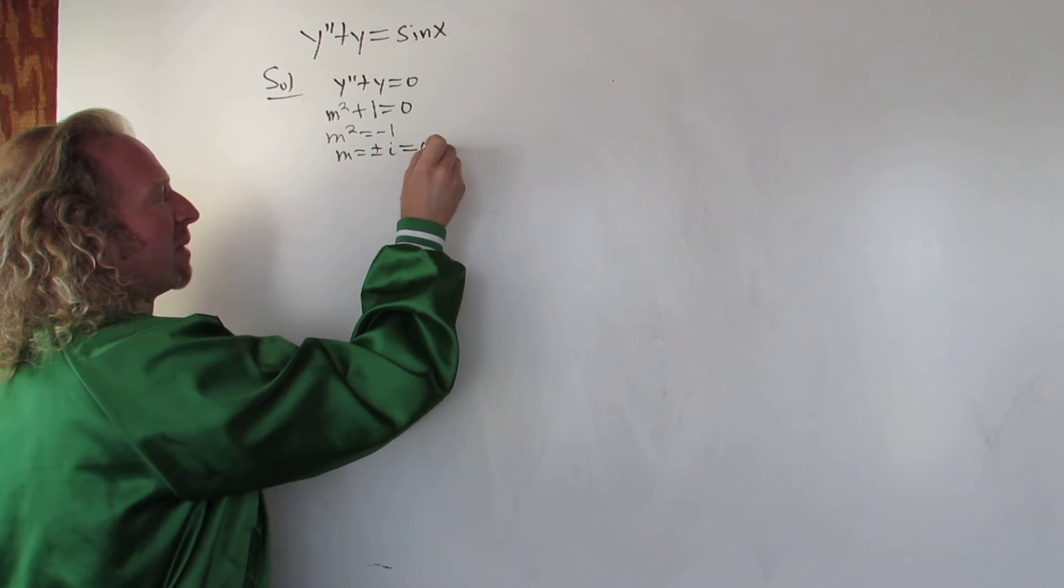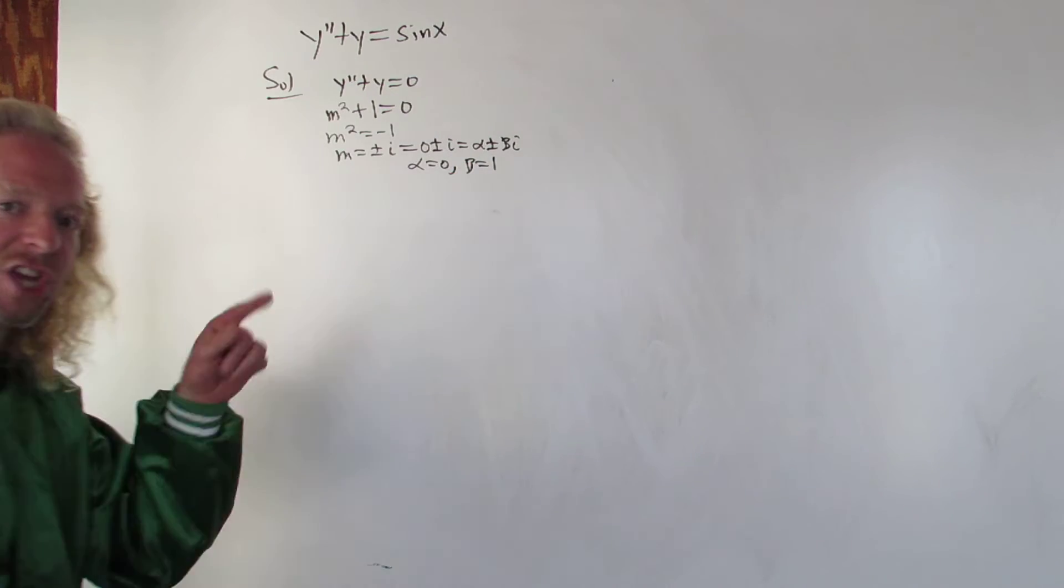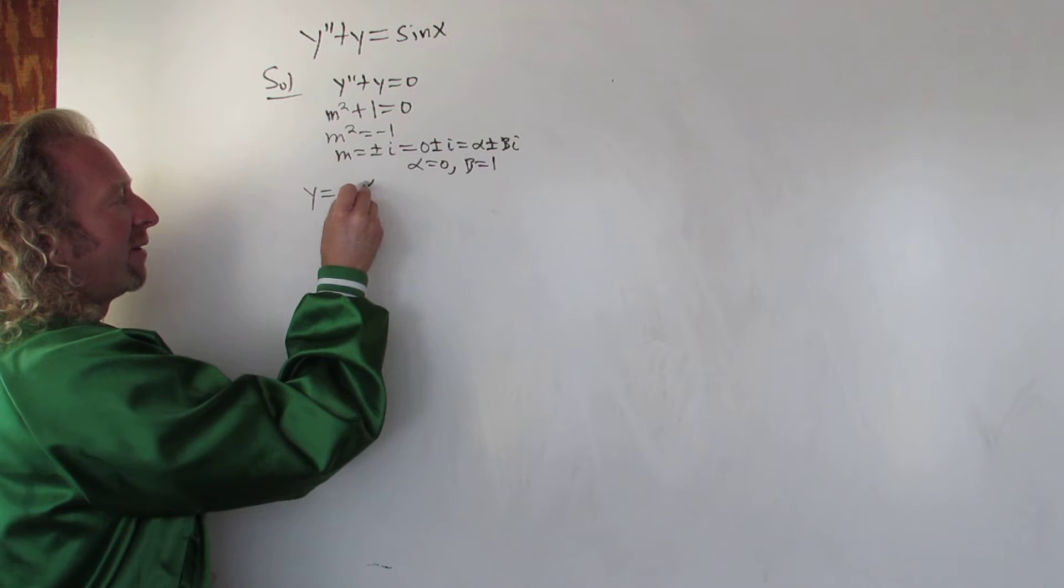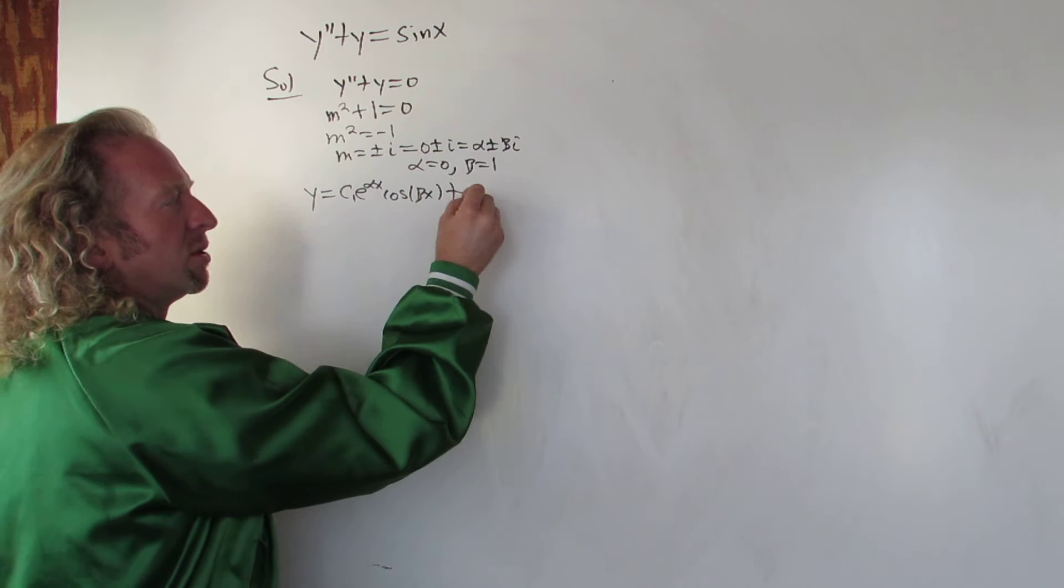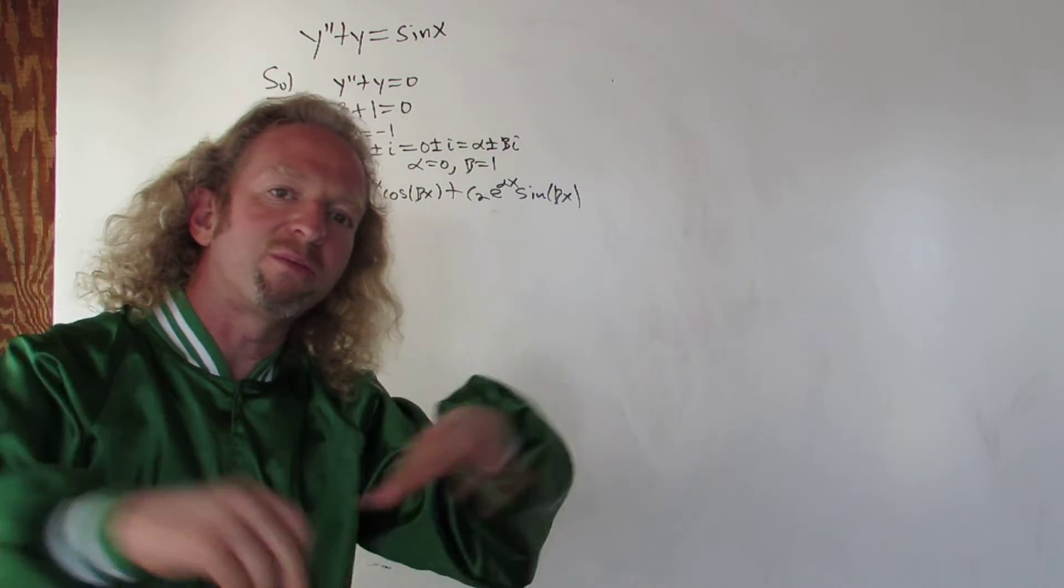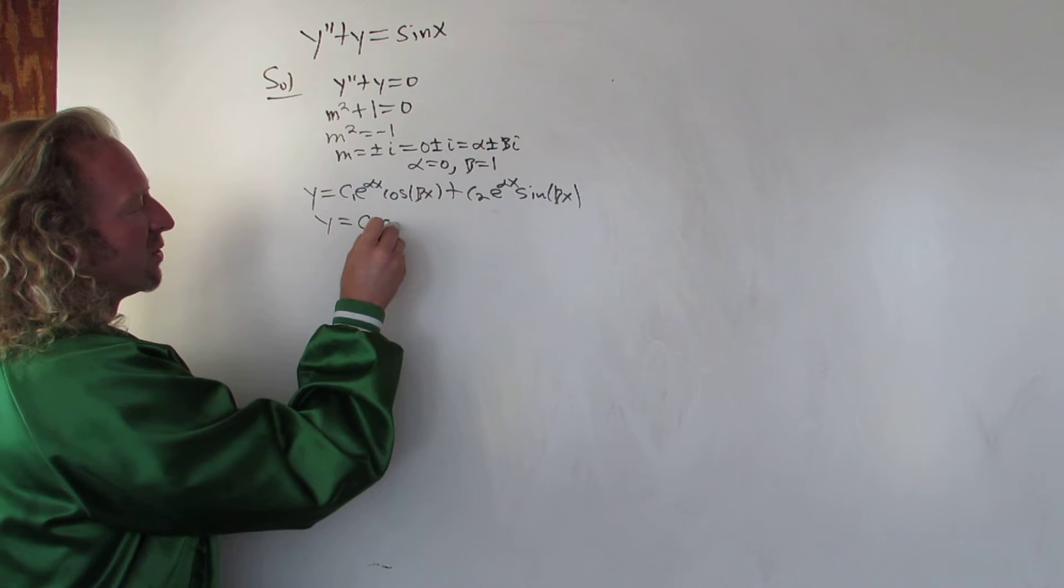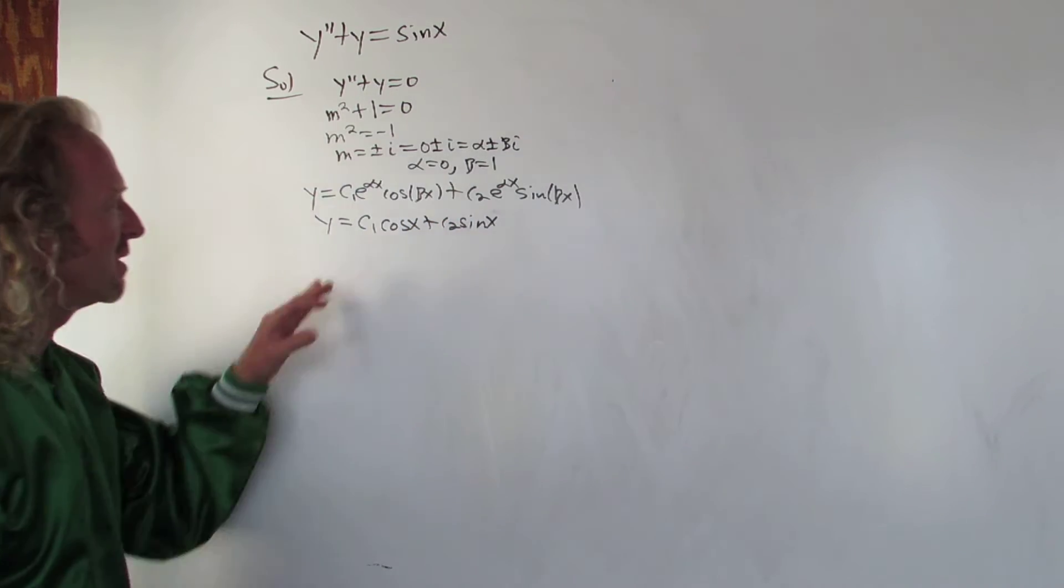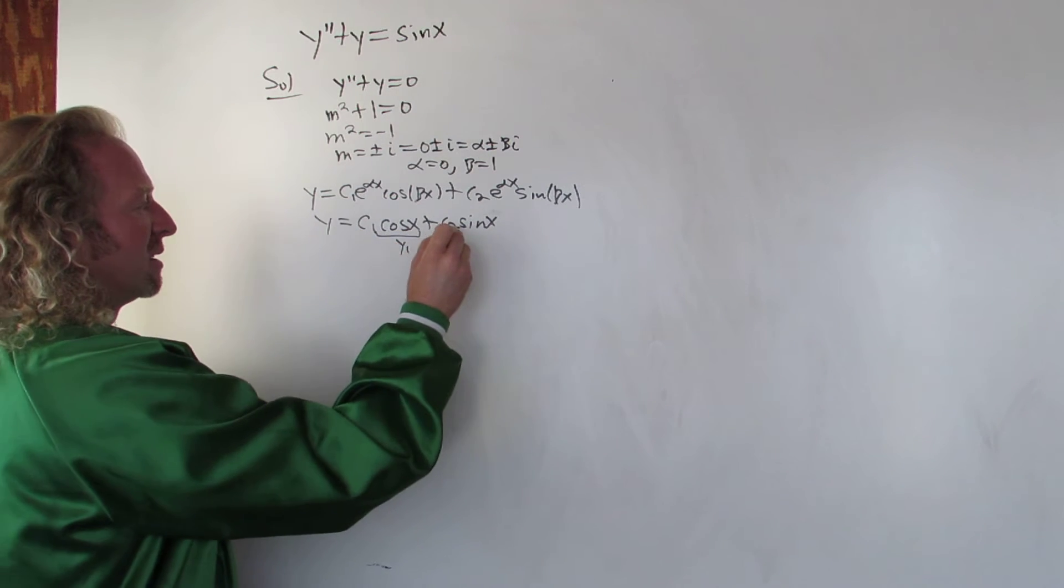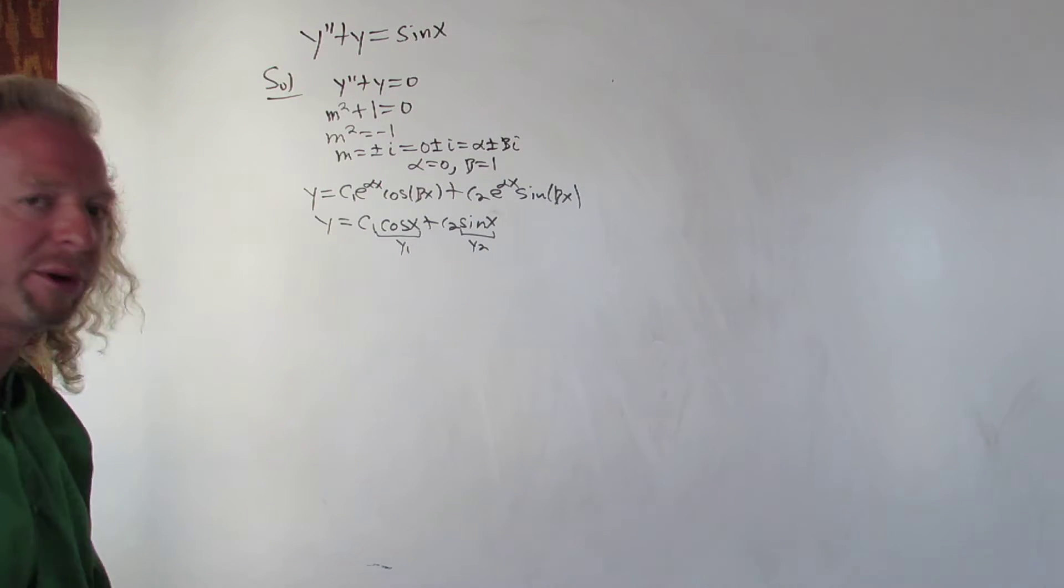These solutions take the form alpha plus or minus beta i. So alpha is equal to 0 and beta is equal to 1. The general form for this type of solution was c1 e to the alpha x cosine beta x plus c2 e to the alpha x sine beta x. Except in this case, alpha is 0, so e to the 0 is 1. You basically get y equals c1 cosine x plus c2 sine x.